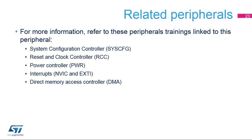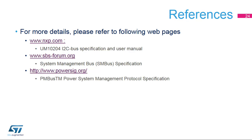For more information related to this peripheral, you can also refer to these peripheral trainings: system configuration controller, reset and clock controller, power controller, interrupts controller, and direct memory access controller. For more details, please refer to the I2C bus specification and user manual from the NXP website. The SMBus specification can be found in the Smart Battery System Implementers forum, and the PMBus Power System Management Protocol specification can be found in the Power Management Bus Implementers forum.